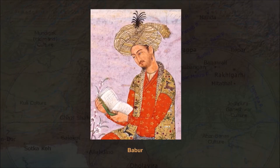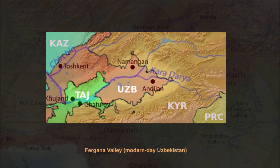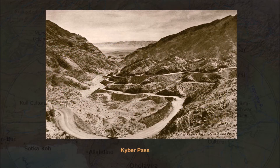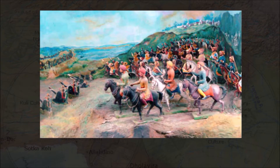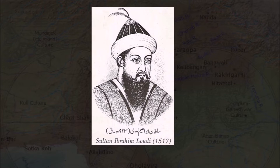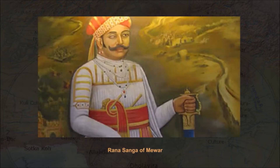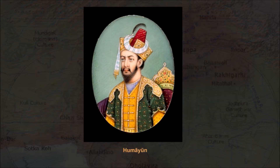In 1526, Babur, a Timurid descendant of Timur and Genghis Khan from the Fergana Valley, modern-day Uzbekistan, was ousted from his ancestral domain in Central Asia. Babur turned to India and crossed the Khyber Pass. From his base in Afghanistan, he secured control of Punjab, and in 1526 decisively defeated the forces of the Delhi Sultan Ibrahim Lodi at the First Battle of Panipat. The next year he defeated the Rajput Confederacy under Rana Sanger of Mewar, and in 1529 defeated the remnants of the Delhi Sultanate. At his death in 1530, the Mughal Empire encompassed almost all of northern India.